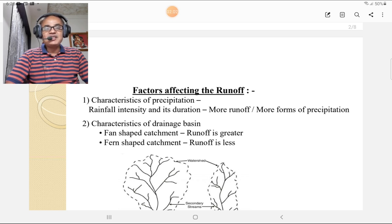First is the characteristics of precipitation. Rainfall intensity and its duration. If rainfall intensity and duration is more, more will be the runoff. And for the different forms of precipitation, the runoff will be different.